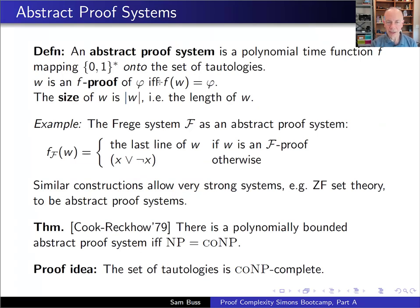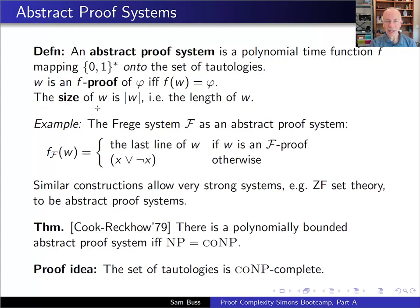This brings up measuring proof sizes in a more abstract way. The definition is due to Cook and Reckhow. An abstract proof system is a polynomial-time function f mapping binary strings {0,1}* onto the set of tautologies. An f-proof of phi is a binary string w such that f(w) = phi. The pre-image of a tautology is a proof of that tautology, and the size of the proof w is the length of w in binary symbols.